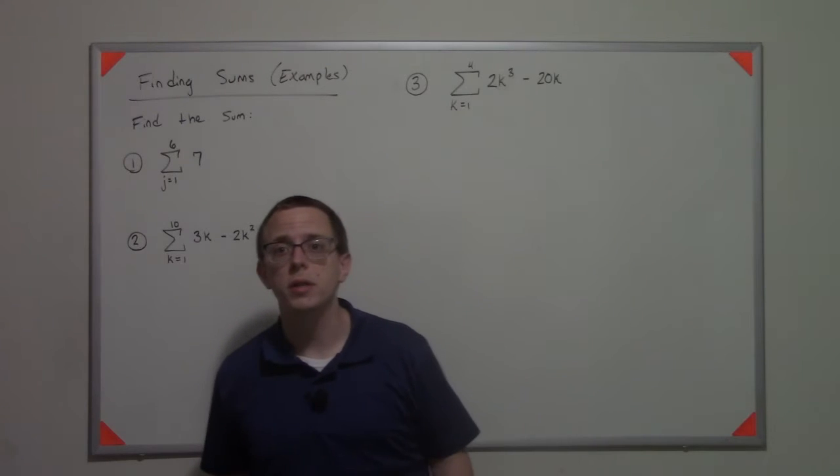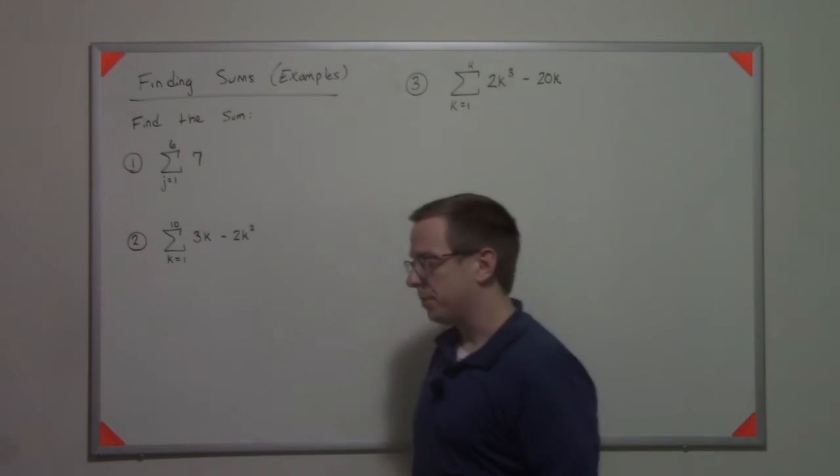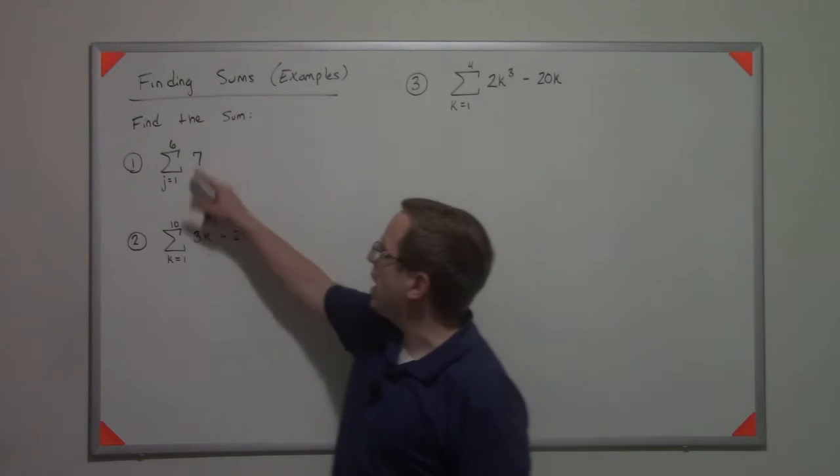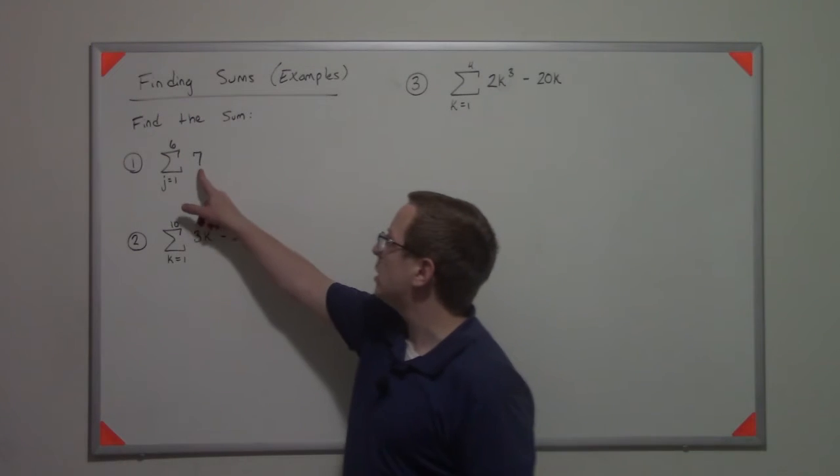Let's put our knowledge of the properties and formulas for sigma sums into practice. The first one is j equals 1 to 6 of 7. So what we know is that this is a constant.